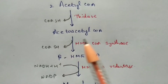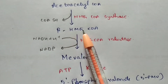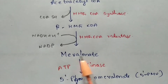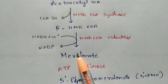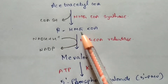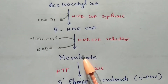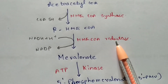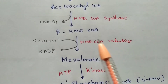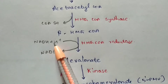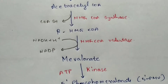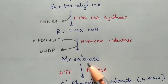From β-hydroxy methyl glutaryl-CoA, mevalonate is formed. The enzyme utilized here is HMG-CoA reductase — since a reduction process takes place, a reductase enzyme is used. NADPH is utilized and NADP⁺ is liberated, leading to the formation of mevalonate.